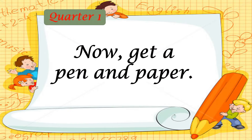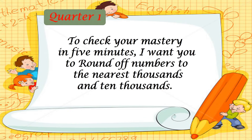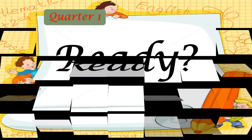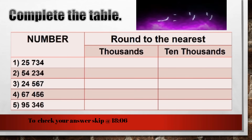Now, get a pen and paper. To check your mastery, in 5 minutes, I want you to round off numbers to the nearest thousands and ten thousands. Ready? Your timer starts now!